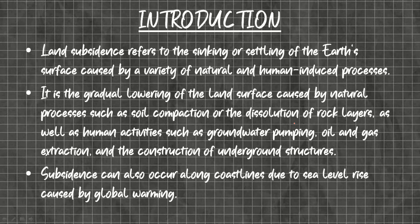Coming to the introduction, land subsidence refers to the sinking or shifting of its surface caused by a variety of natural and human-induced processes. It is a gradual lowering of land surface caused by natural consequences such as soil compaction — that means compression of soil — or dissolution of rock layers present between the soil layers, as well as human activities such as groundwater pumping, oil and gas extraction, and construction of underground structures like tunnels. Subsidence can also occur along coastlines due to sea level rise caused by global warming.